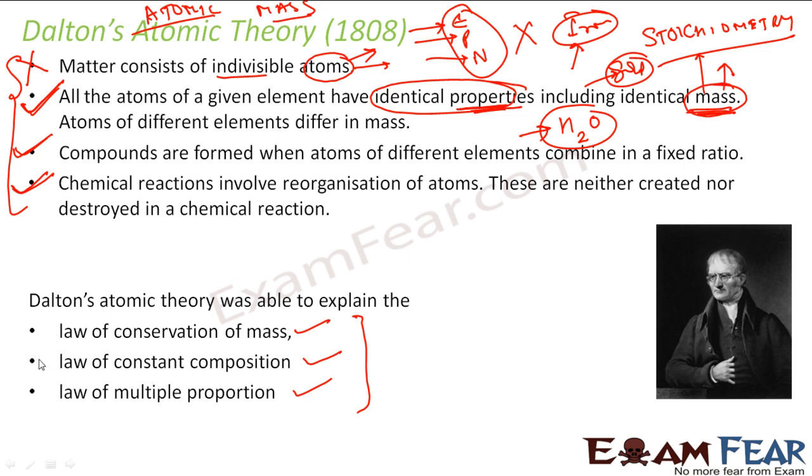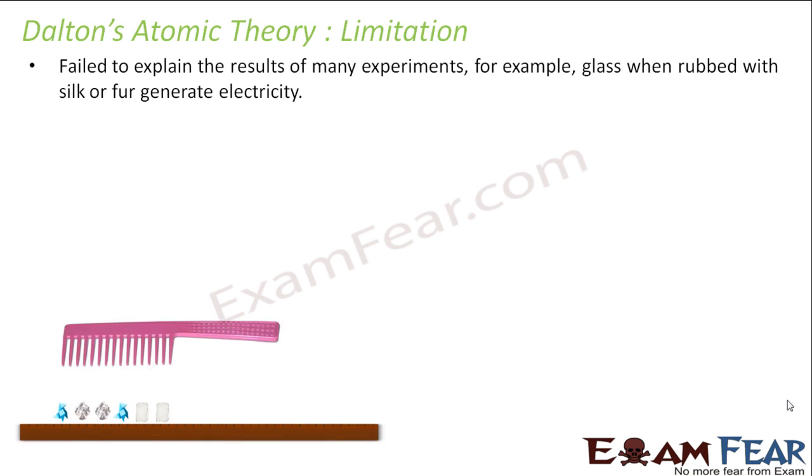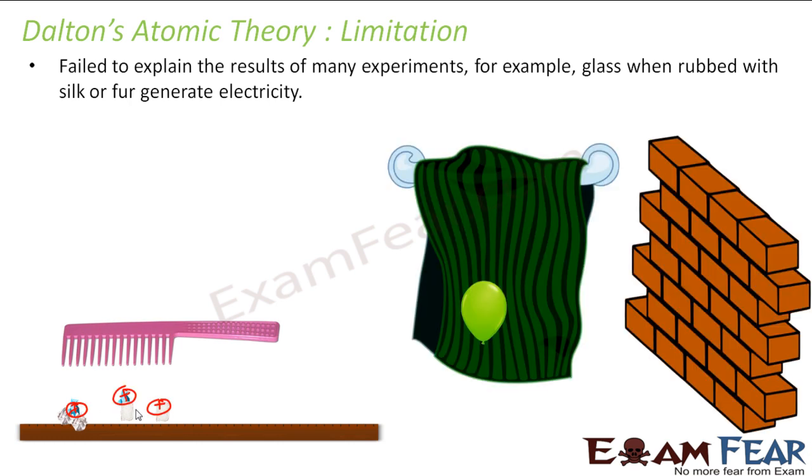But there was an issue with Dalton atomic theory. What was the issue? The issue was people found that when you take, for example, a comb and then you rub this with something, it gets attracted - that means some charge comes here. Some charge comes here when you rub. Also, if you take fur and the balloon, if you rub like this, then it gets charged, it gets some positive charge. Now the question was from where you're getting the charge?